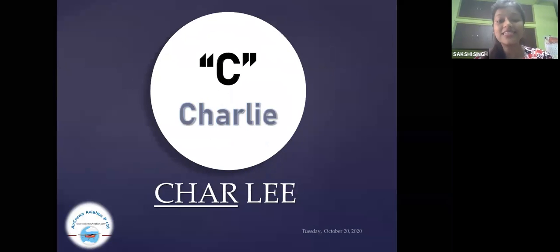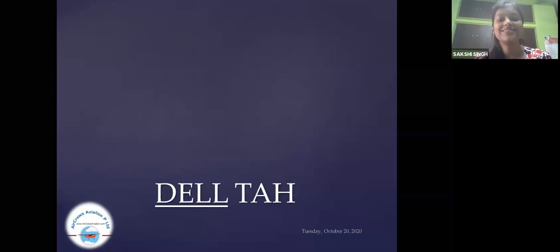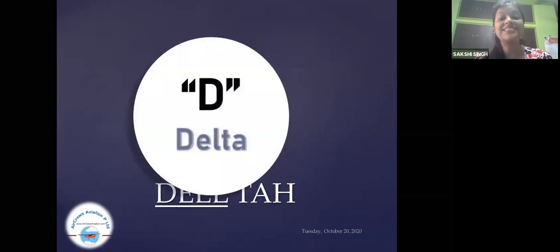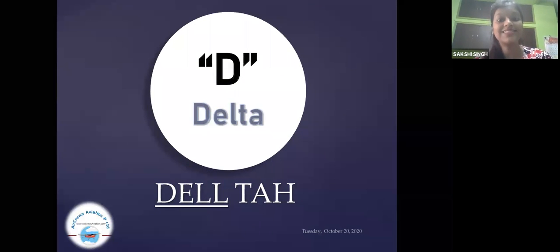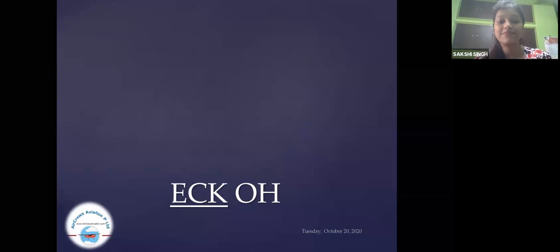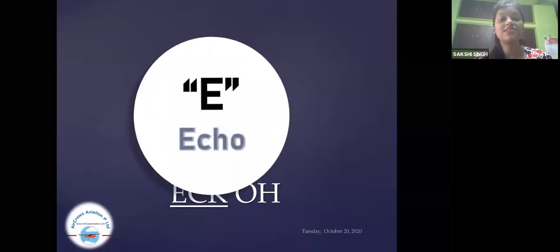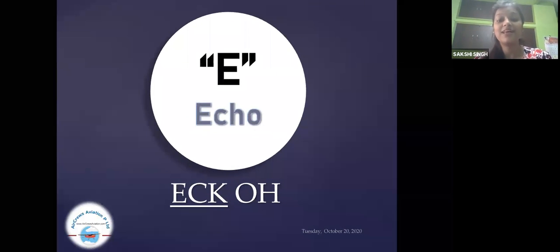C, that is Charlie. D, that is delta. Not a delta. That is delta. It is not eco. This is an echo. The right pronunciation of this echo is echo, not eco.